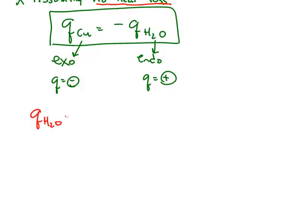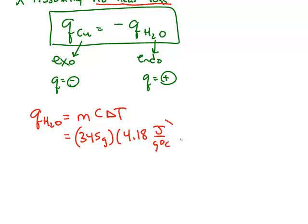So if we focus just on the water, we can calculate Q for the water using the formula M times C times delta T. The mass of the water was 345 grams. Heat capacity, specific heat capacity, 4.18 joules per gram degrees Celsius.